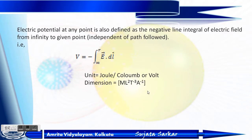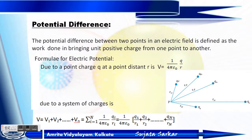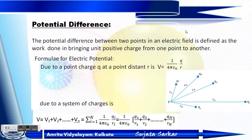Now, what is potential difference? We have charges q1, q2, q3, q4, q5 at different positions, with distances r1P, r2P, r3P, r4P, and r5P from point P. The potential difference between two points in an electric field is defined as the work done in bringing a unit positive charge from one point to another. The formula is V equals one over four pi epsilon-naught times q over r.